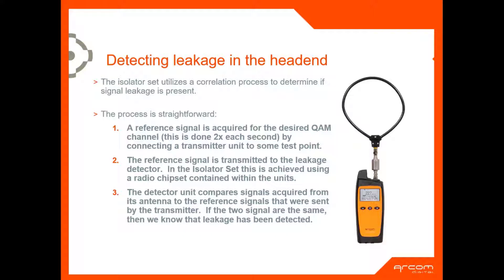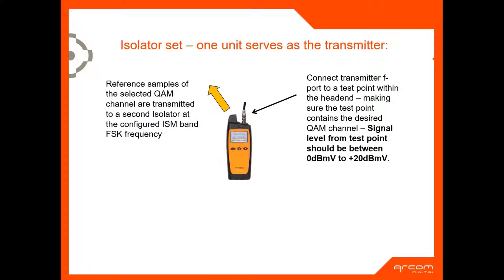You've got a transmitter and you've got a detector. Your detector unit is going to compare what it's picking up off the air to the samples that it's receiving from the transmitter. Just like with the QAM snare scheme, whether you utilize a navigator or navigator plus, if the two signals are the same, then we know that we have detected a leak.